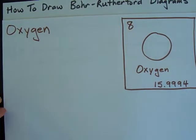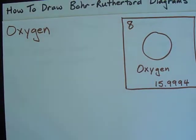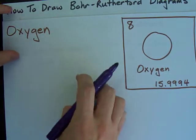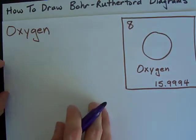How to draw the Bohr-Rutherford Diagram for Oxygen. The first thing you need for a Bohr-Rutherford Diagram is the number of protons and neutrons.